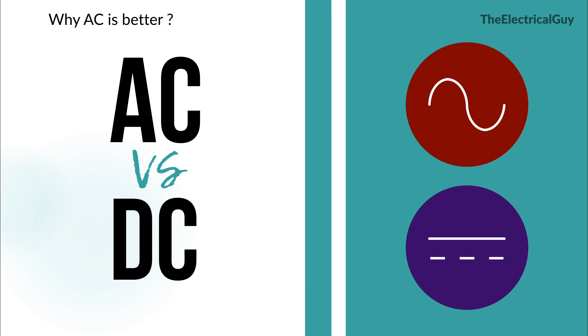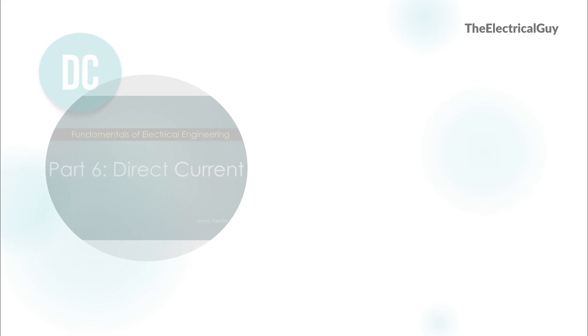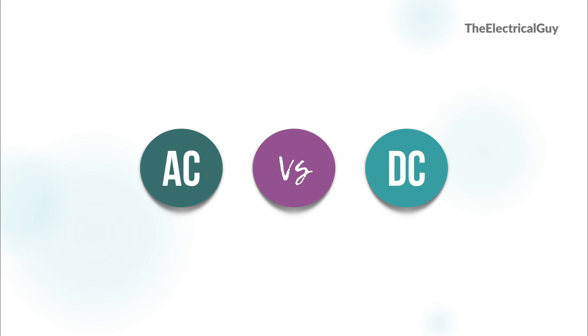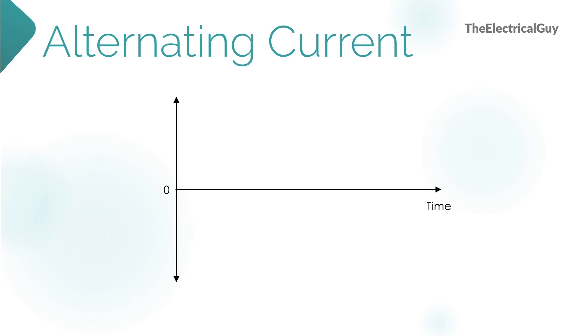Before we start with the difference between AC and DC, I'll strongly recommend you to watch my previous videos on AC and DC in which I have explained about the basics. As the name suggests, alternating current changes its direction and magnitude with time.